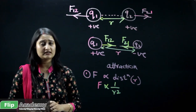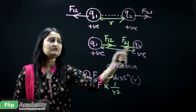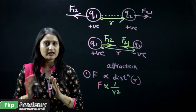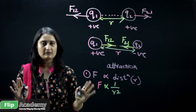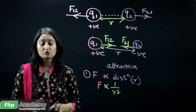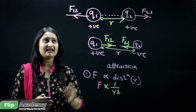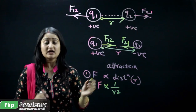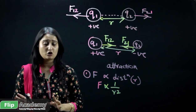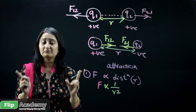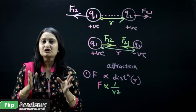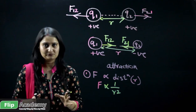One important thing to note is that the distance being referred to is the straight-line distance — not any curved line or zigzag line. The distance of separation between Q1 and Q2 should be the straight line joining the two.